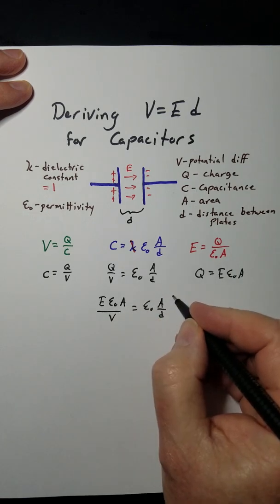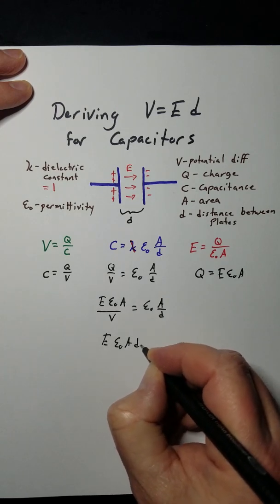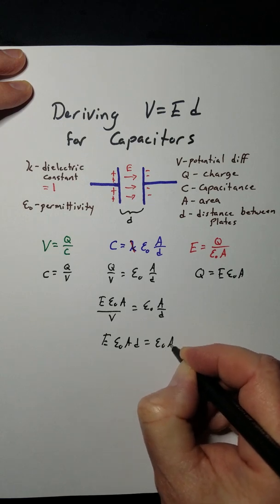Now I'm going to cross multiply. So E epsilon naught A, D equals E epsilon naught A, V.